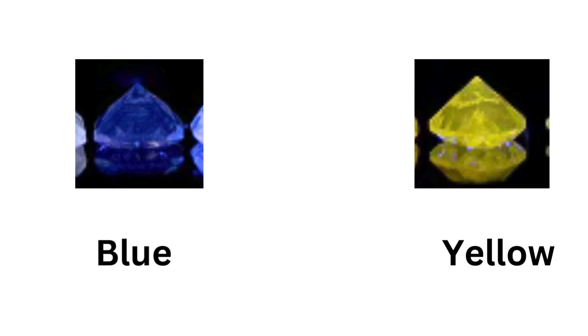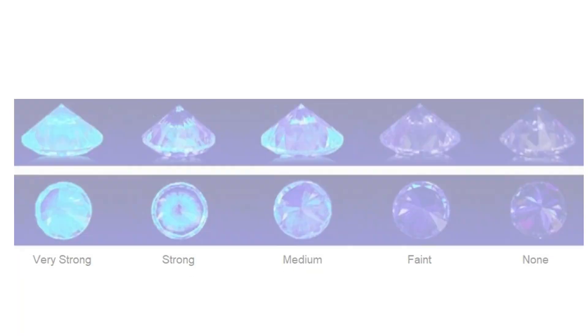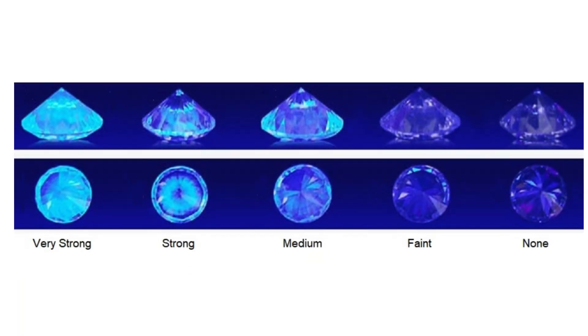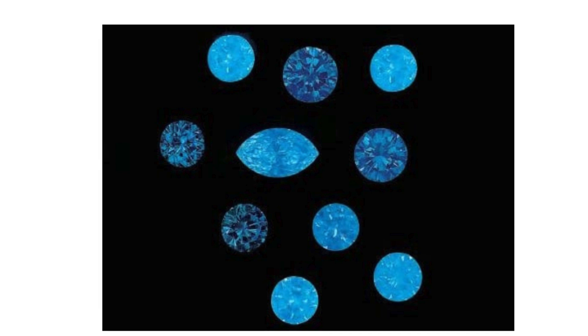The second factor is the strength of the fluorescence. The range goes from none — no fluorescence at all — to faint, then medium, then strong, and finally very strong fluorescence. If a stone has very strong blue fluorescence, it is considered really good because it enhances the stone's color in a distinctive way, creating an illusion that the color is improved and making it look really beautiful.